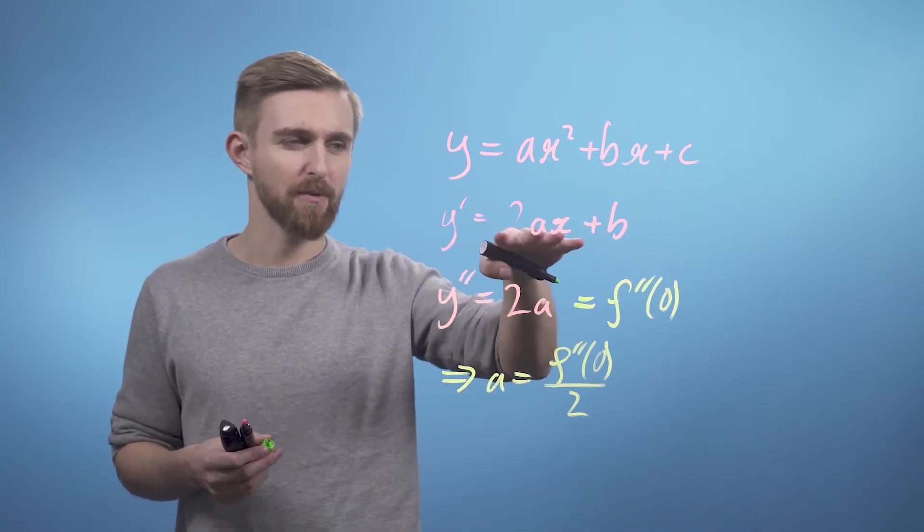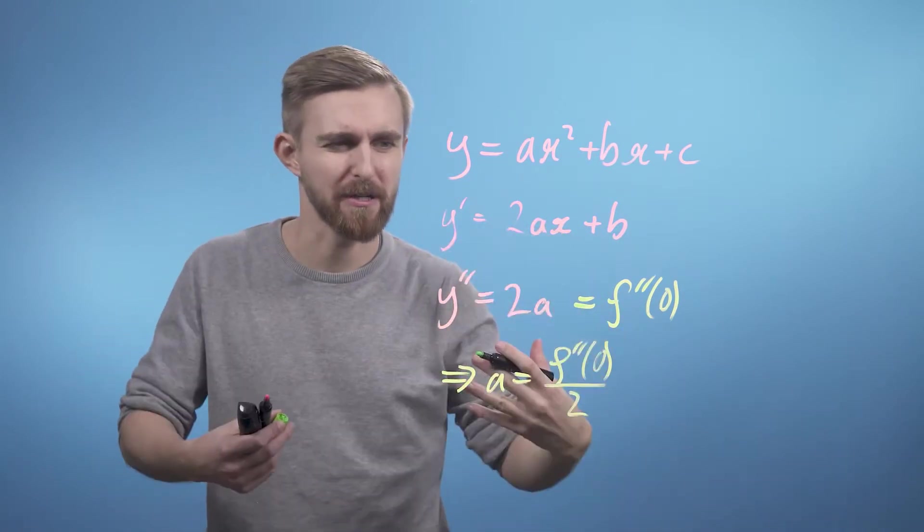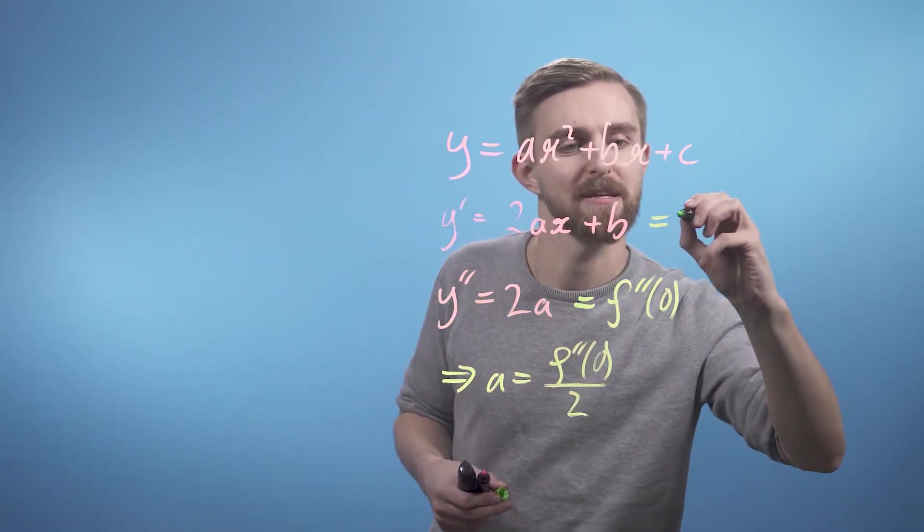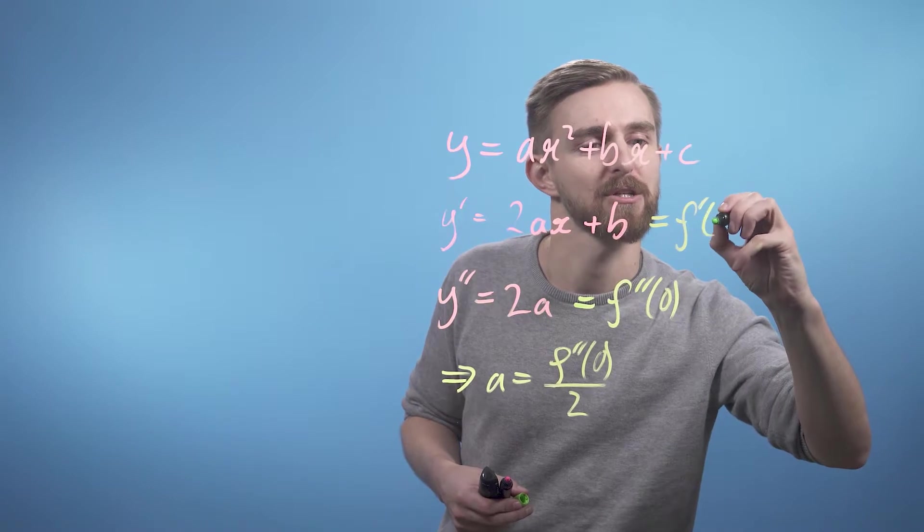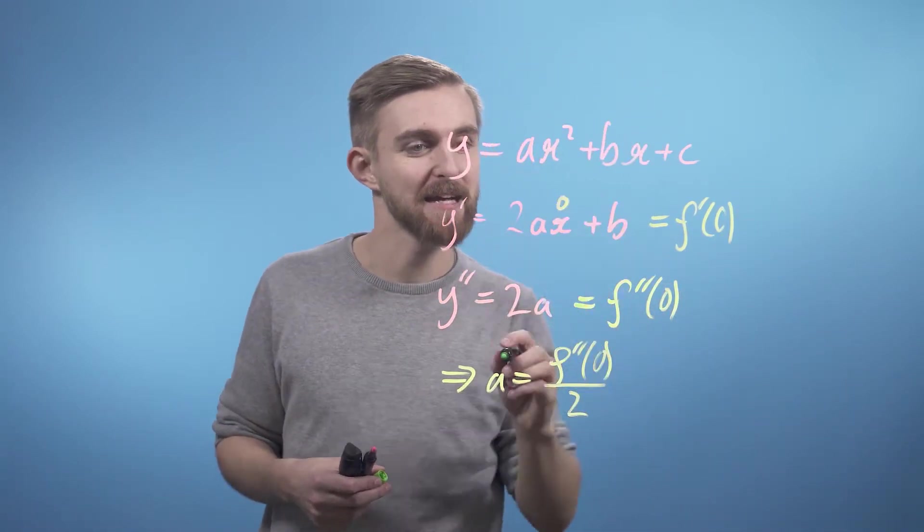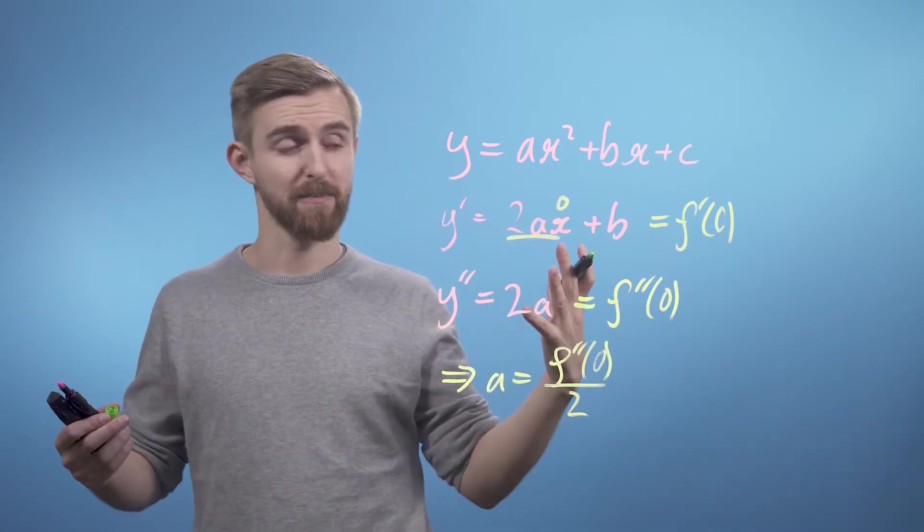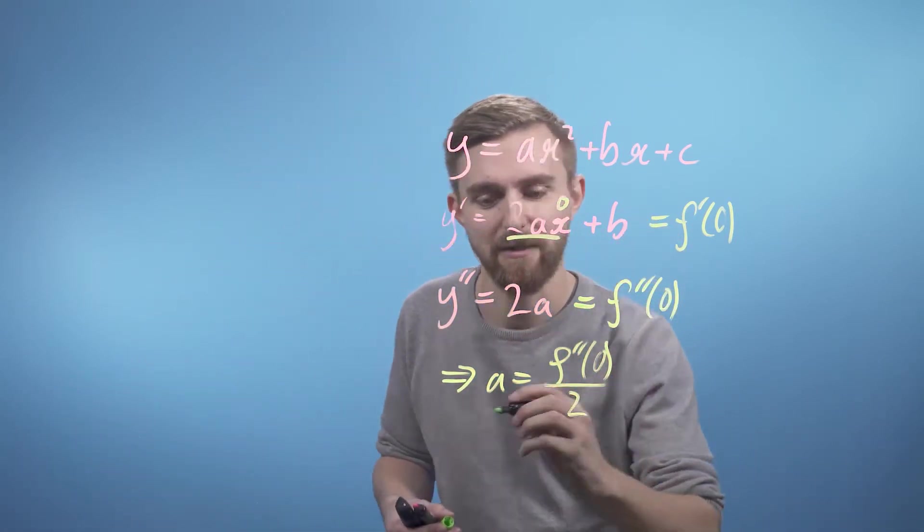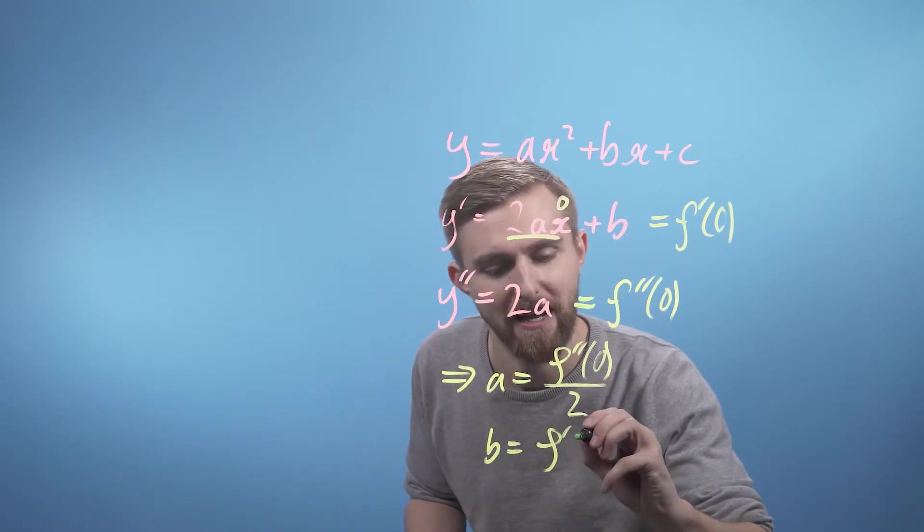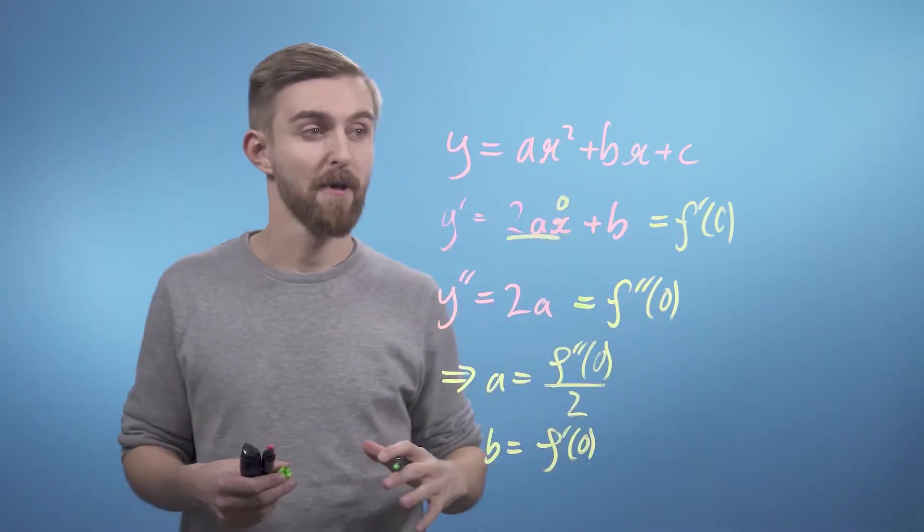Now, if we look up at this equation here, we also want the first derivative to be equal to the function at 0. So we can set this equal to f dash of 0, and we're subbing in 0 for this x here, so this term just disappears. So we can now say that also b equals f dash of 0.